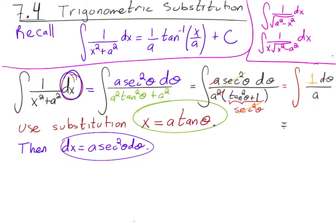That gives 1 over a times theta plus c. But we're not done — we have the answer in terms of theta, and we need to go back to the original variable. Since x equals a tan θ, this means x/a equals tan θ, which implies theta equals inverse tangent of x over a.